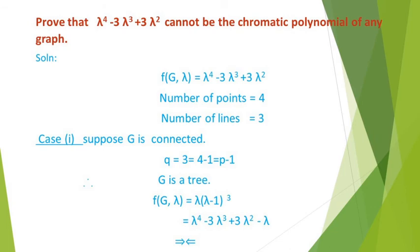Next, one problem related to chromatic polynomials: prove that lambda^4 - 3*lambda^3 + 3*lambda^2 cannot be the chromatic polynomial of any graph. The solution: take the given polynomial f(G, lambda) = lambda^4 - 3*lambda^3 + 3*lambda^2. The highest power of lambda is always the number of vertices of the graph. Here the highest power is 4, so the number of vertices of this polynomial's related graph is 4.